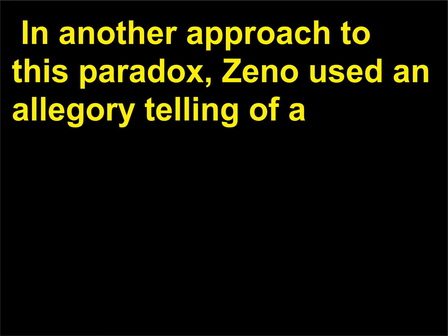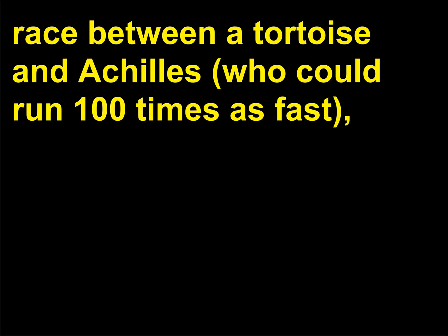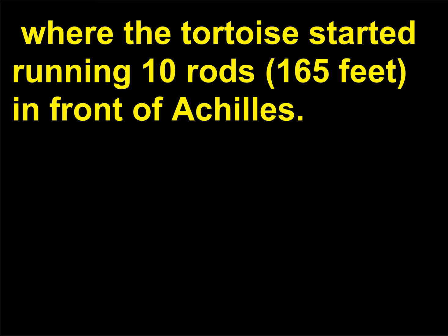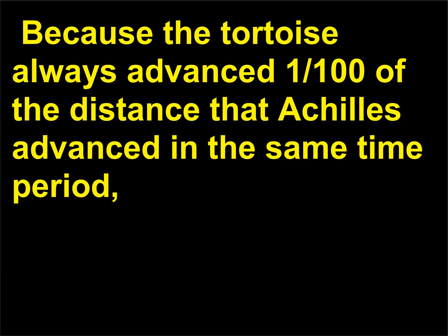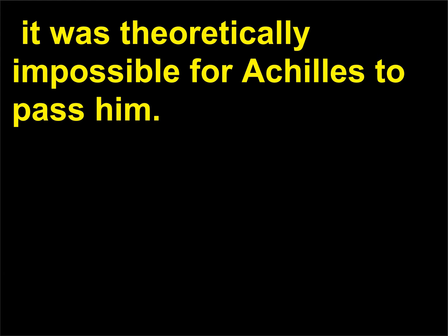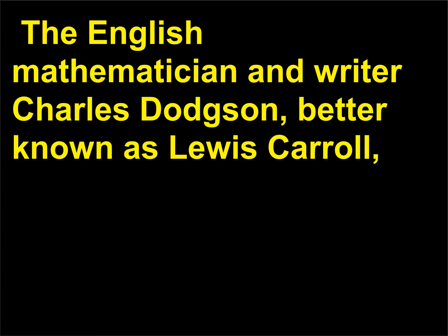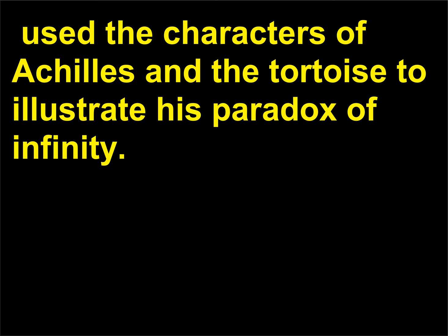In another approach, Zeno used an allegory telling of a race between a tortoise and Achilles, who could run 100 times as fast, where the tortoise started 10 rods (165 feet) in front of Achilles. Because the tortoise always advanced 1/100 of the distance that Achilles advanced in the same time period, it was theoretically impossible for Achilles to pass him. The English mathematician and writer Charles Dodgson, better known as Lewis Carroll, used the characters of Achilles and the tortoise to illustrate his paradox of infinity.